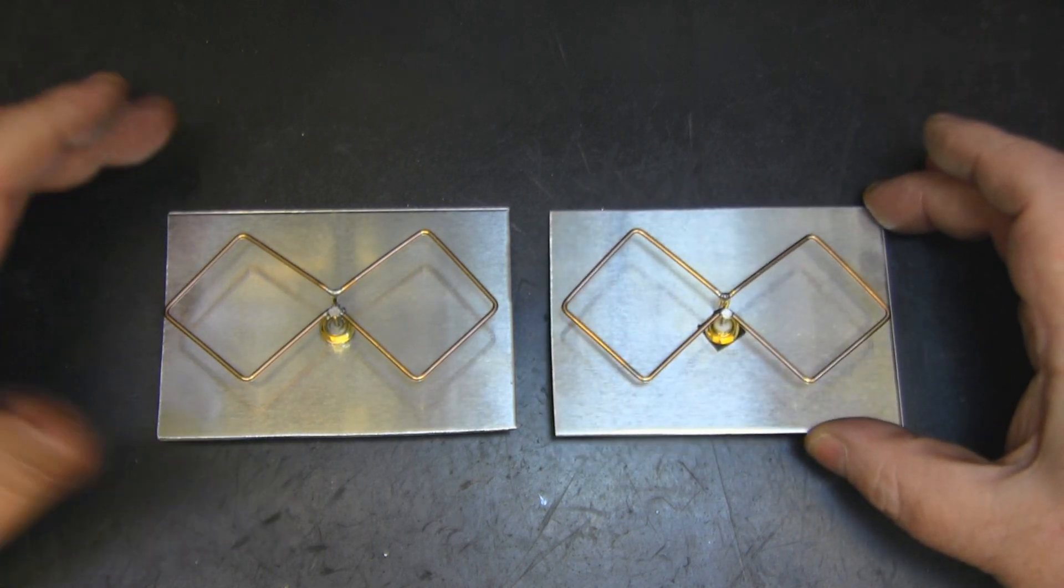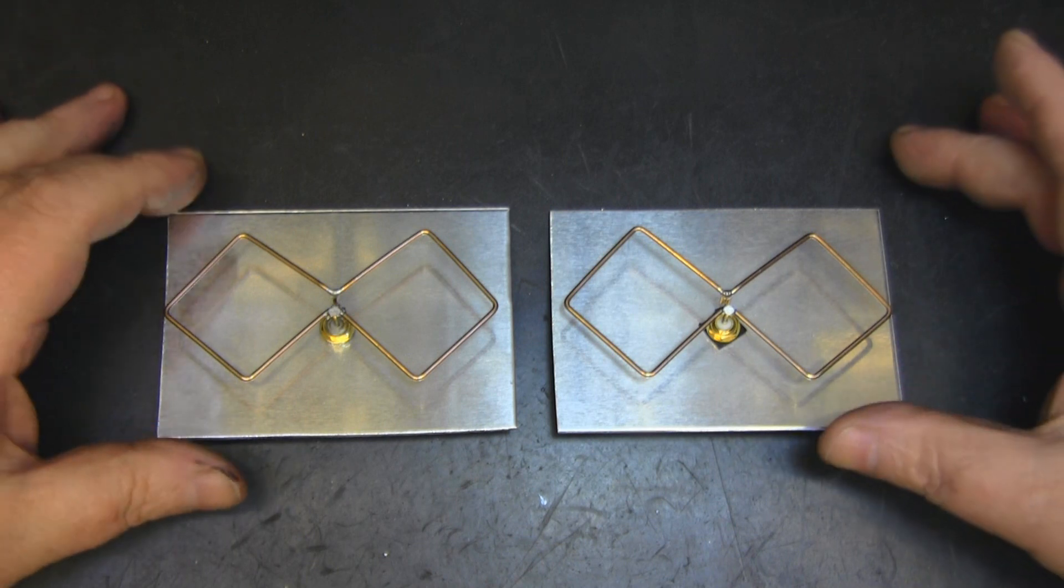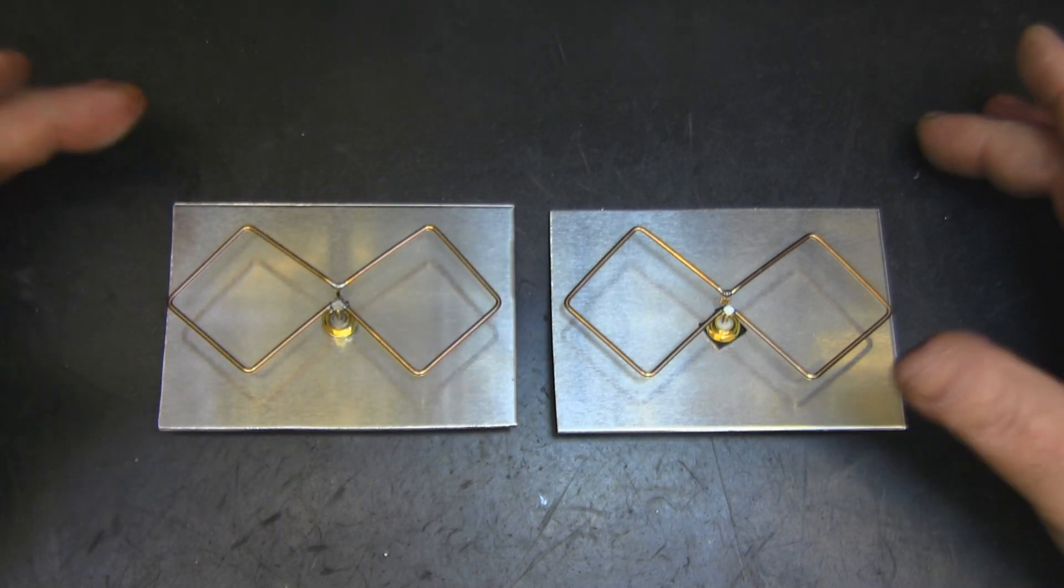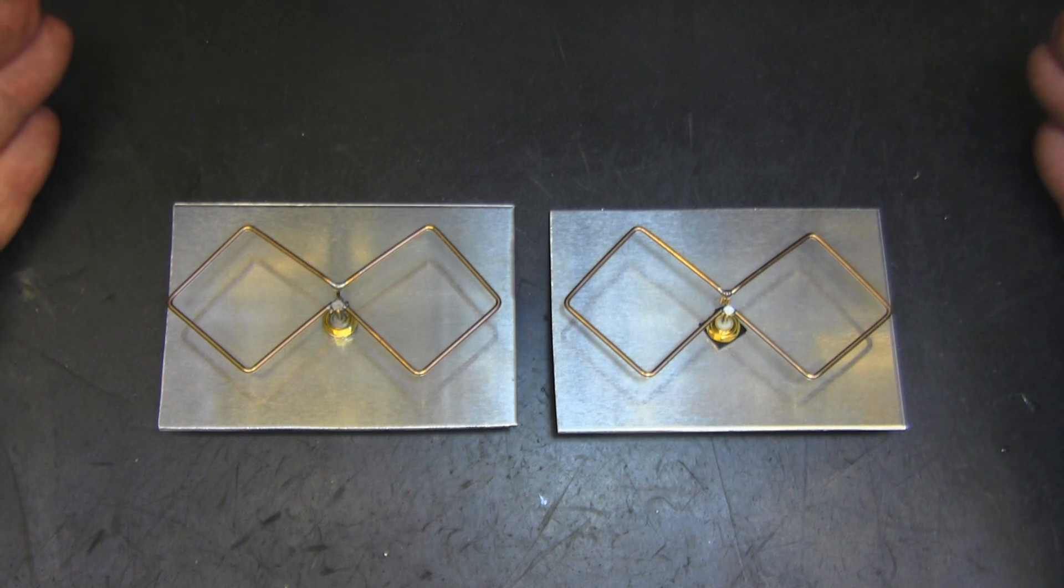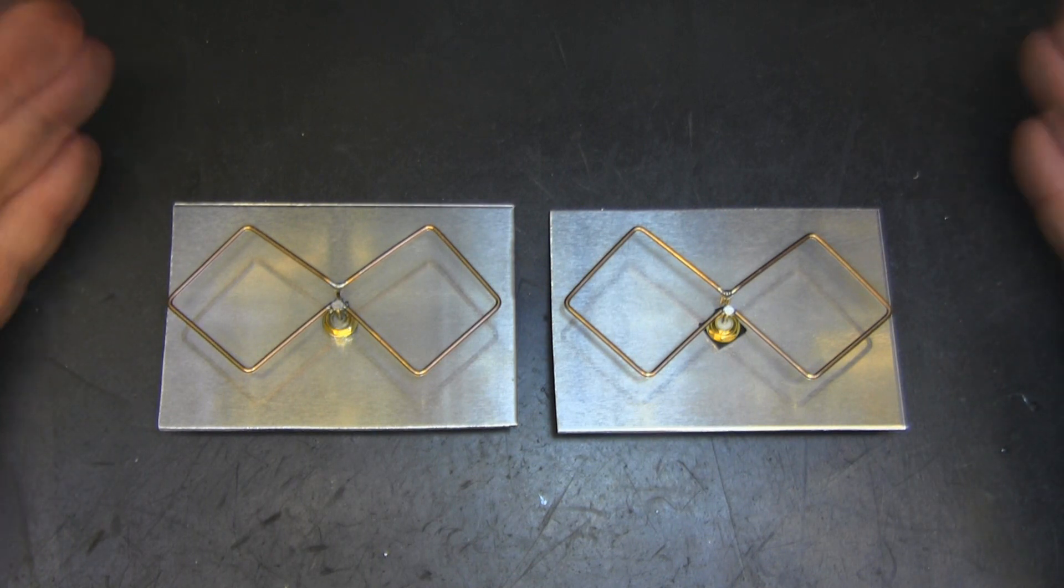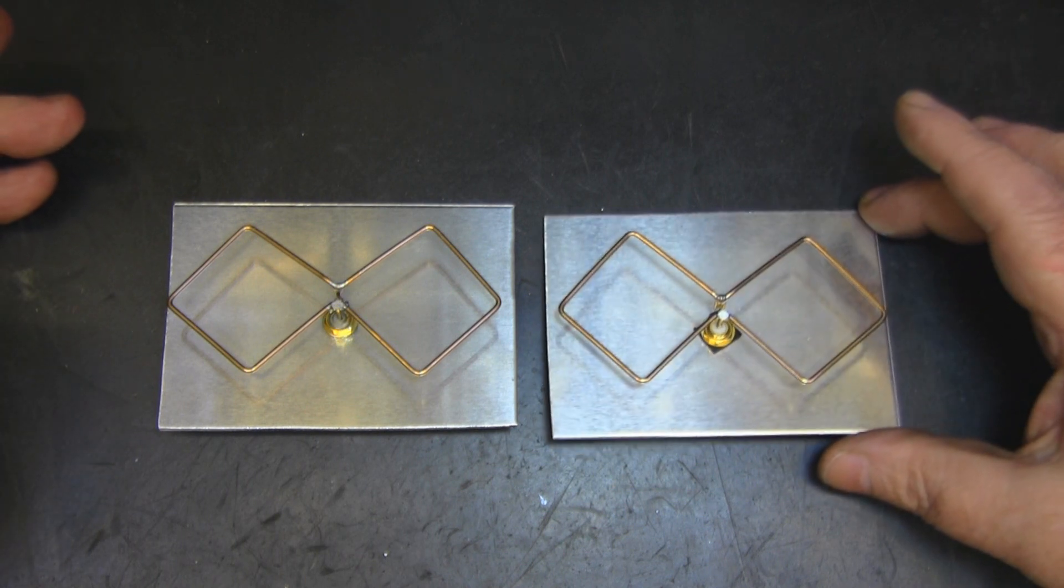But of course they both work, it's just that the grounded one is much more efficient. And of course there are different designs of antennas out there that you can't ground the back reflector down onto. When it's not a possibility, the next best thing is to have an ungrounded back reflector.